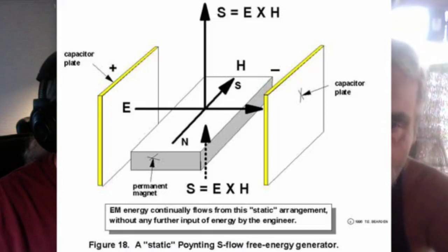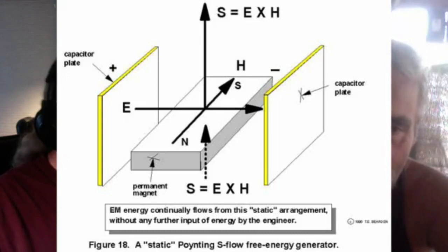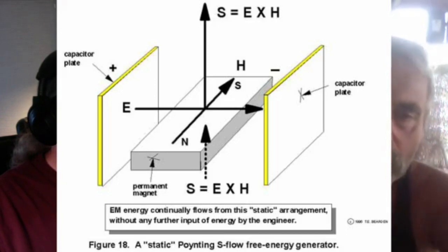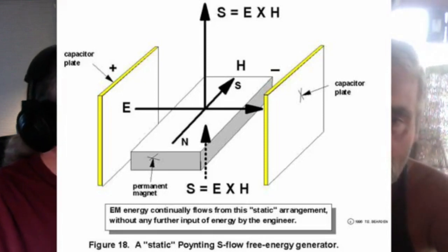So the brother's question is: this is called the Poynting energy generator. If two capacitors are charged at 120 volts at 60 cycles and placed at 90 degrees near a magnet, will the energy keep flowing? No. The answer is no. Unfortunately, if it was that simple, everybody would be doing it, brother.